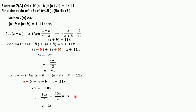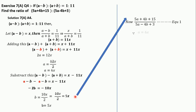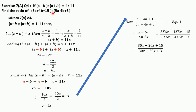Now we substitute a = 6x and b = 5x into the given expression: (5a + 4b + 15) / (5a − 4b + 3). This becomes (5×6x + 4×5x + 15) / (5×6x − 4×5x + 3), which simplifies to (30x + 20x + 15) / (30x − 20x + 3), giving us (50x + 15) / (10x + 3).